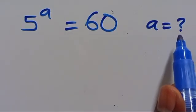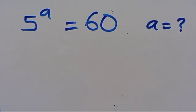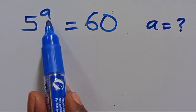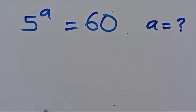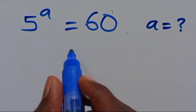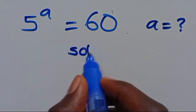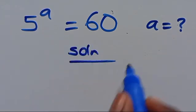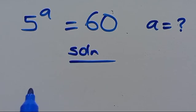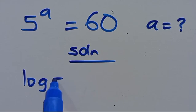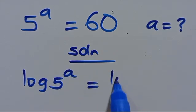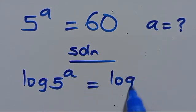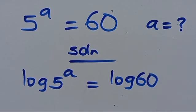Hello. What is the value of A, given that 5 to the power of A equals 60? So from here, let's have it to be the solution. Let's introduce log to both sides. So we have log 5 to the power of A equals log 60.